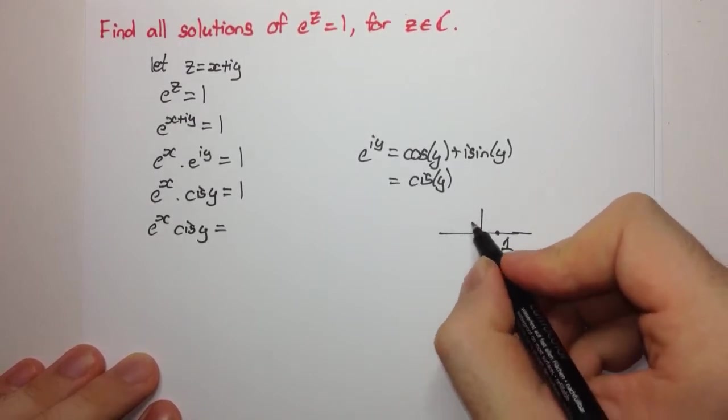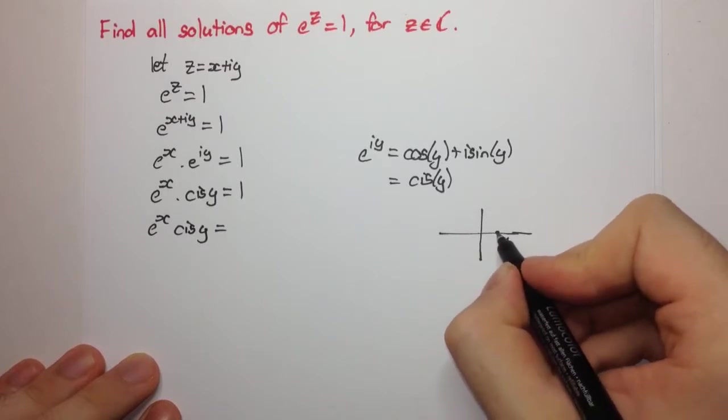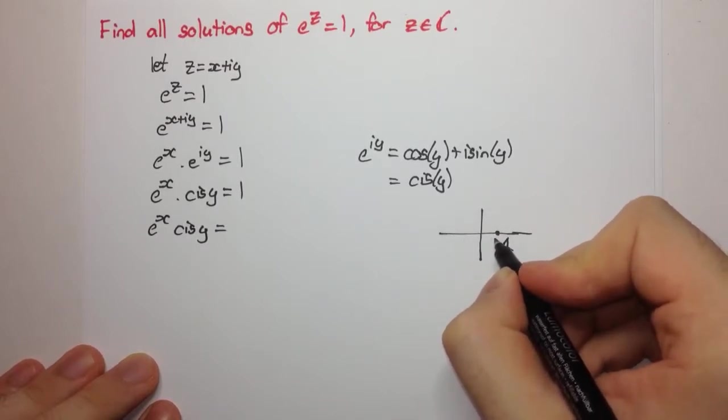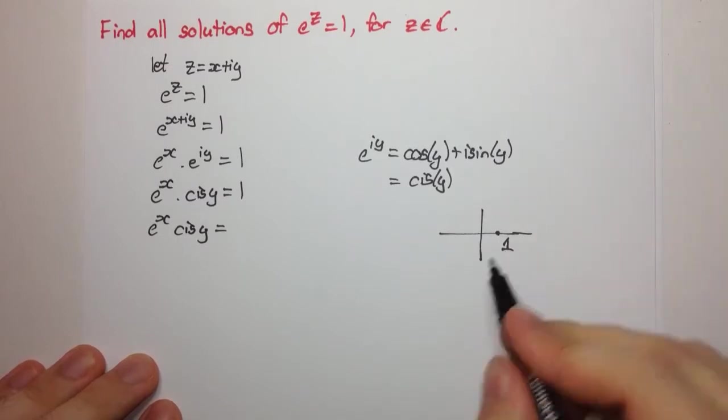And as you can see, we can keep going around as many times as we like. As long as we go around in integer multiples of 2π, we're going to get back to 1.